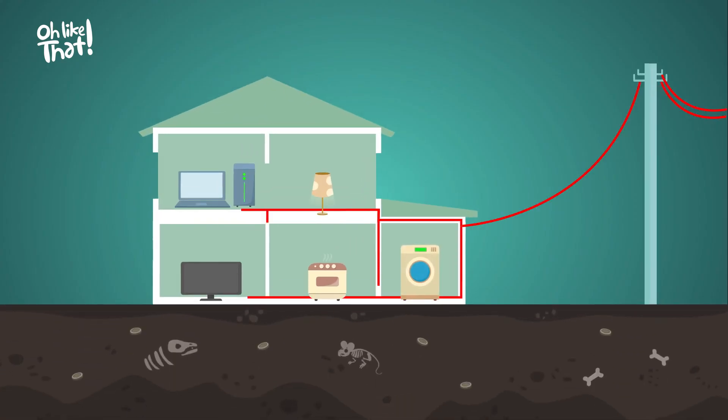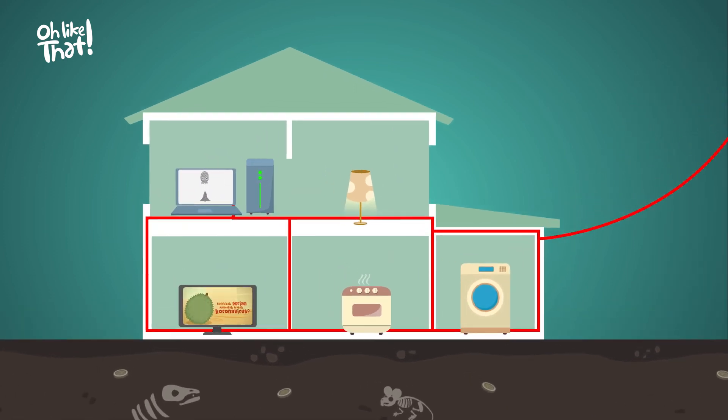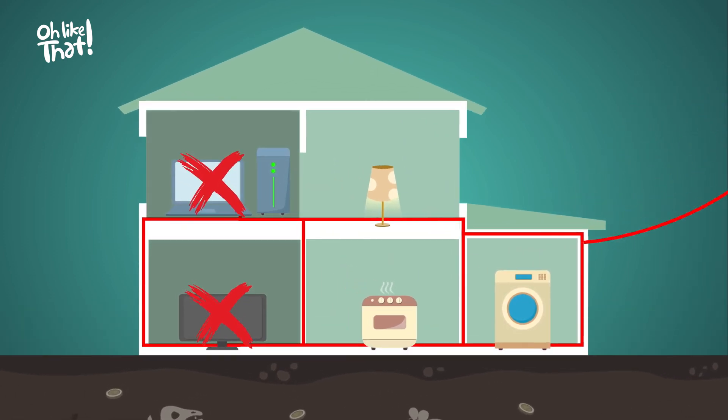Our household wiring is mainly planned in a parallel circuit. That way, if the TV fails, at least you'll still get to use your lamp, cooker, and washing machine.